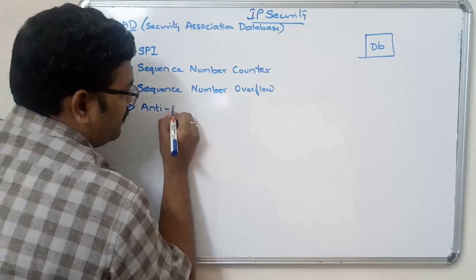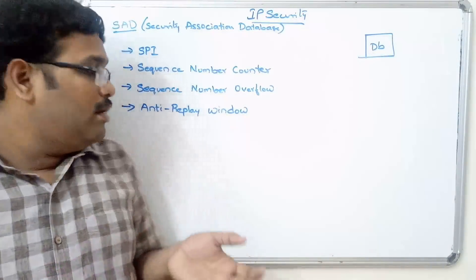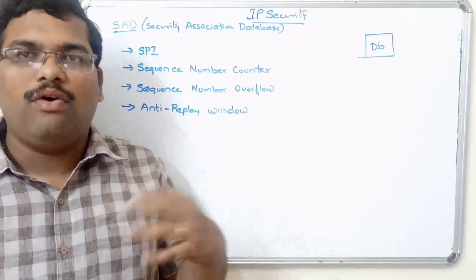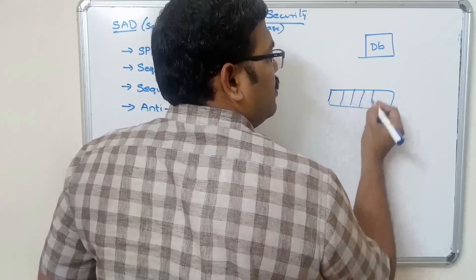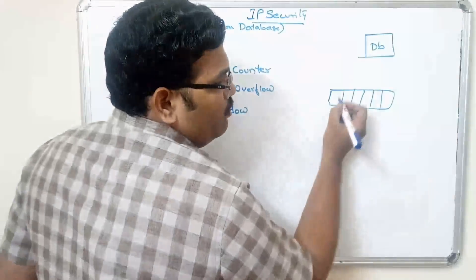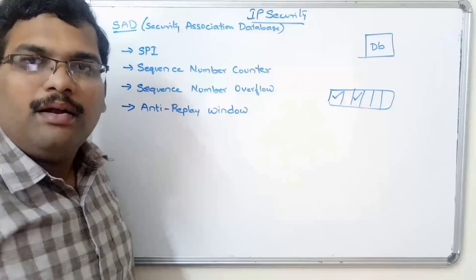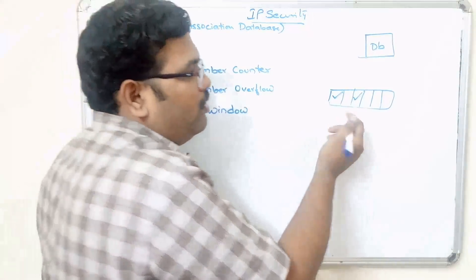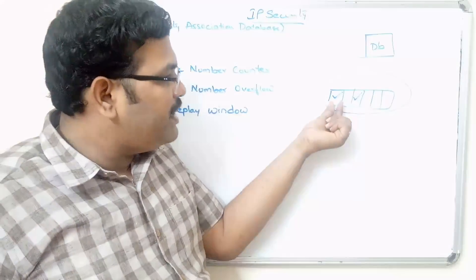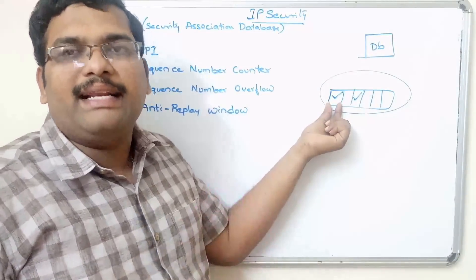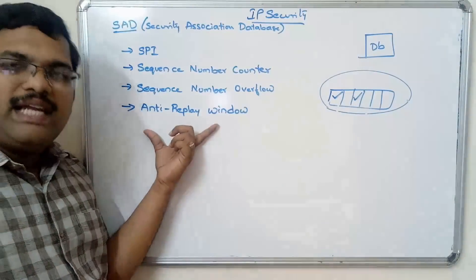The anti-replay window parameter is used to avoid receiving duplicate packets. We maintain a window with all the packet numbers to be received. When a packet arrives, we mark its number in the window. The packet's sequence number is compared with the window, and if it is already marked, that implies the packet has already been received — meaning it is a duplicate. To avoid duplicate packets, we use this anti-replay window.